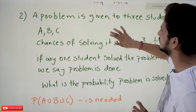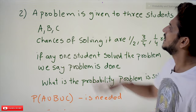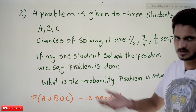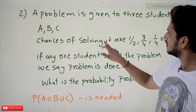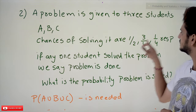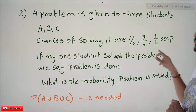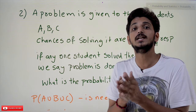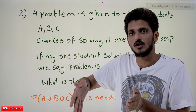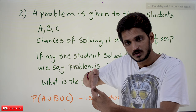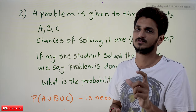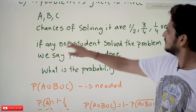Coming to the second example — this is very important to understand and will give you greater intuition about probability. A mathematical problem is given to three students A, B, and C. Their chances of solving it are: A has a 1/2 chance, B has a 3/4 chance, and C has a 1/4 chance. The important point to understand is that these are independent events — the probability that A solves it does not affect the probability that B or C solves it.